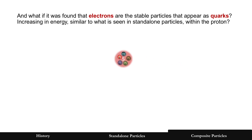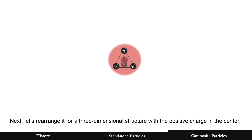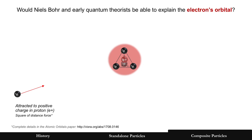In standalone particles, you can't add the masses together — energy increases at a much higher power. So let's assume the stable particle, the electron, is what's seen as a quark. Now, one more thing: let's rearrange this for the positron. That central particle is actually a positron — the electron's antimatter equivalent. Put it in the center surrounded by four electrons in a three-dimensional structure, and ask: would Niels Bohr and early quantum theorists be able to explain the electron's orbital?